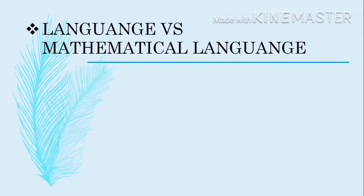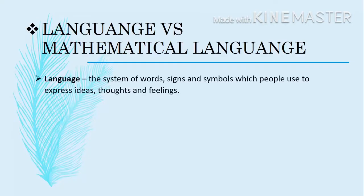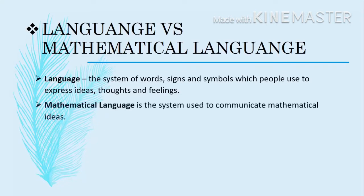Let's differentiate language and mathematical language. Language is the system of words, signs, and symbols which people use to express ideas, thoughts, and feelings, while mathematical language is the system used to communicate mathematical ideas. Mathematical language is specifically for mathematical ideas, while language has a broader sense.